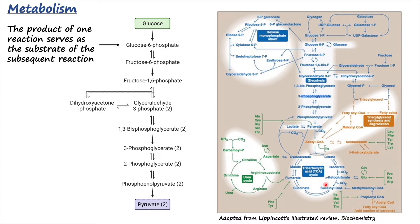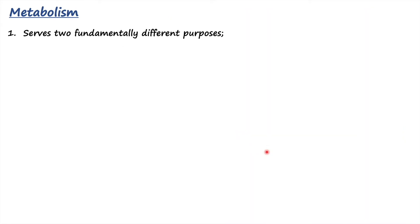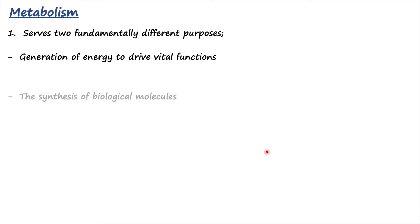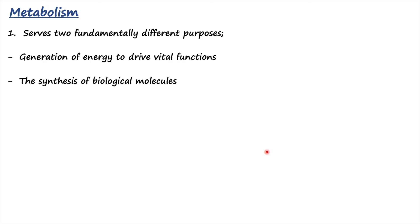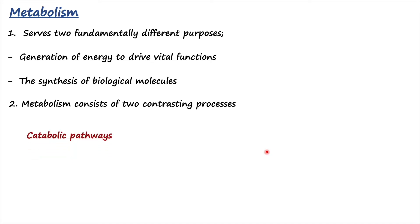Likewise, there are many pathways which are interconnected and form a big network of chemical reactions — collectively called metabolism, which is the sum of all chemical changes occurring in a cell, tissue, or body. Metabolism serves two fundamentally different purposes: first, it generates energy to drive all vital functions; and second, it synthesizes biological molecules.